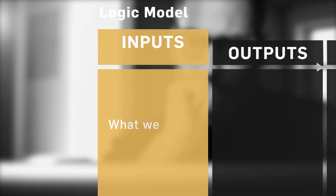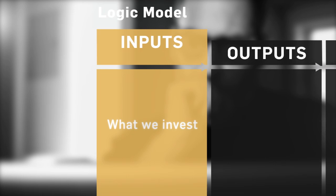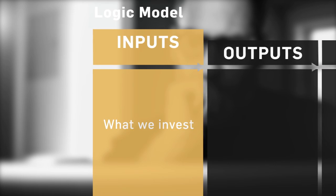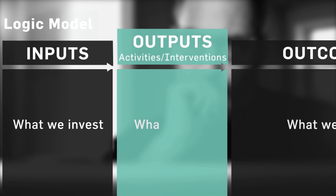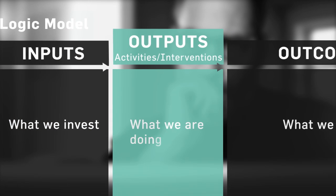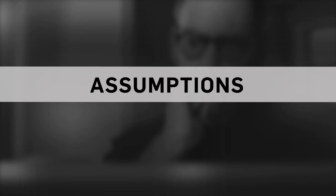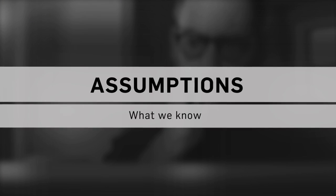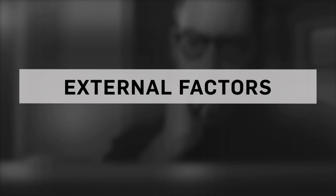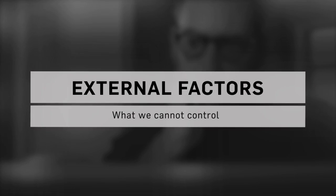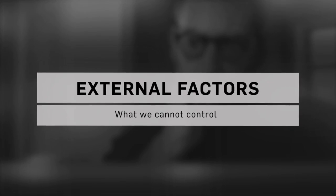Inputs are what you invest, like staffing, funding, equipment, and technology. Outputs are the activities you're doing, and whom you're doing them for. Assumptions are what you already know. And external factors are things that are out of your control, like organizational changes and environmental factors.